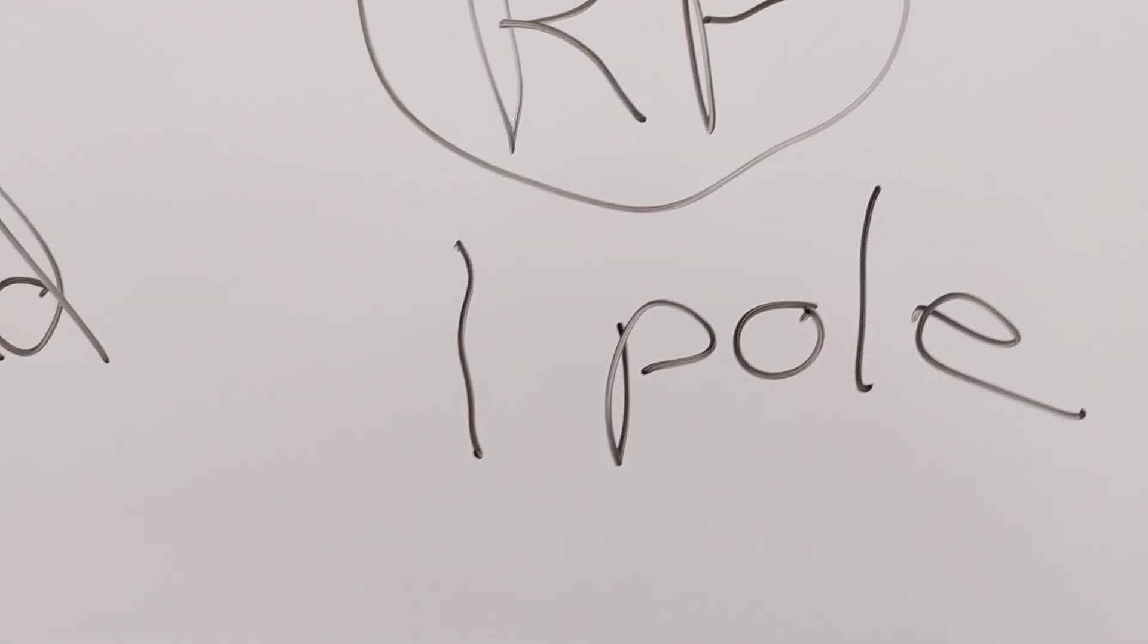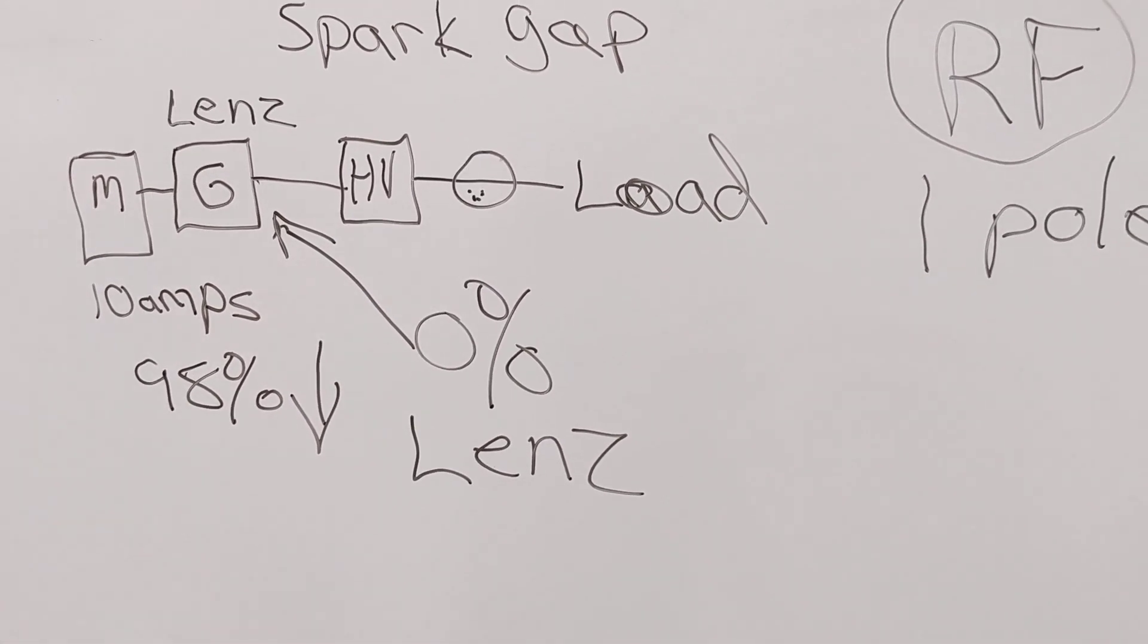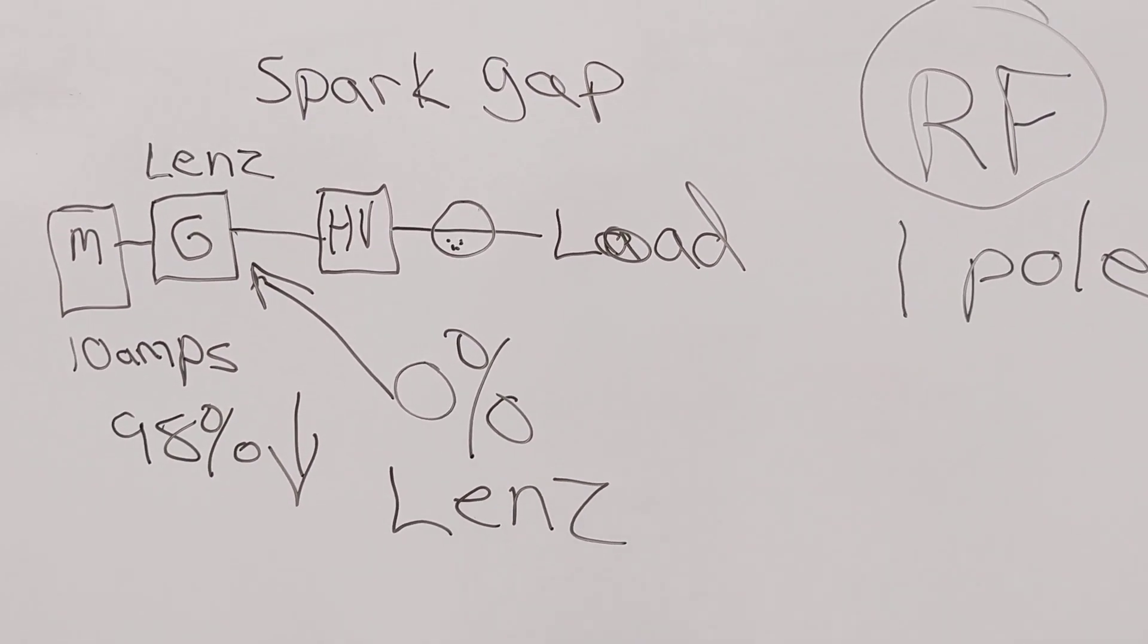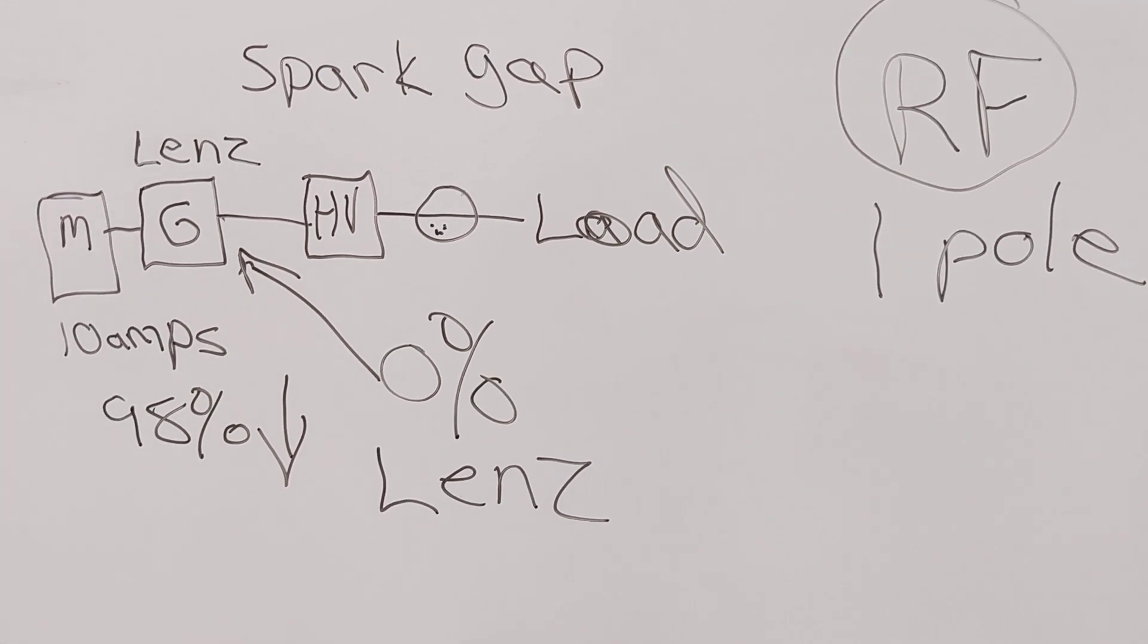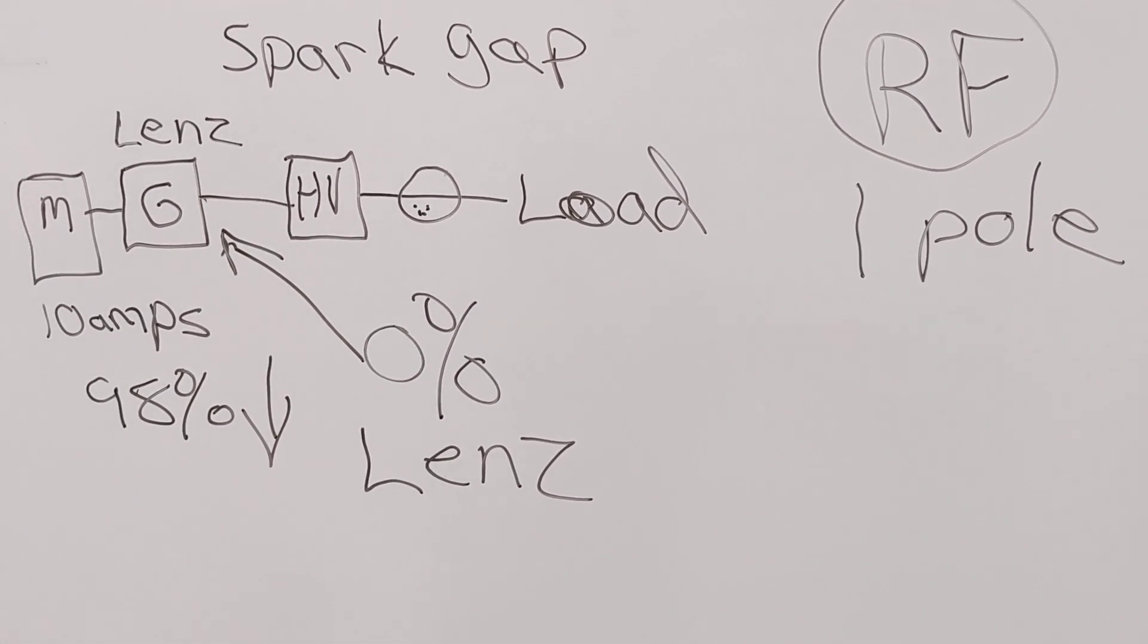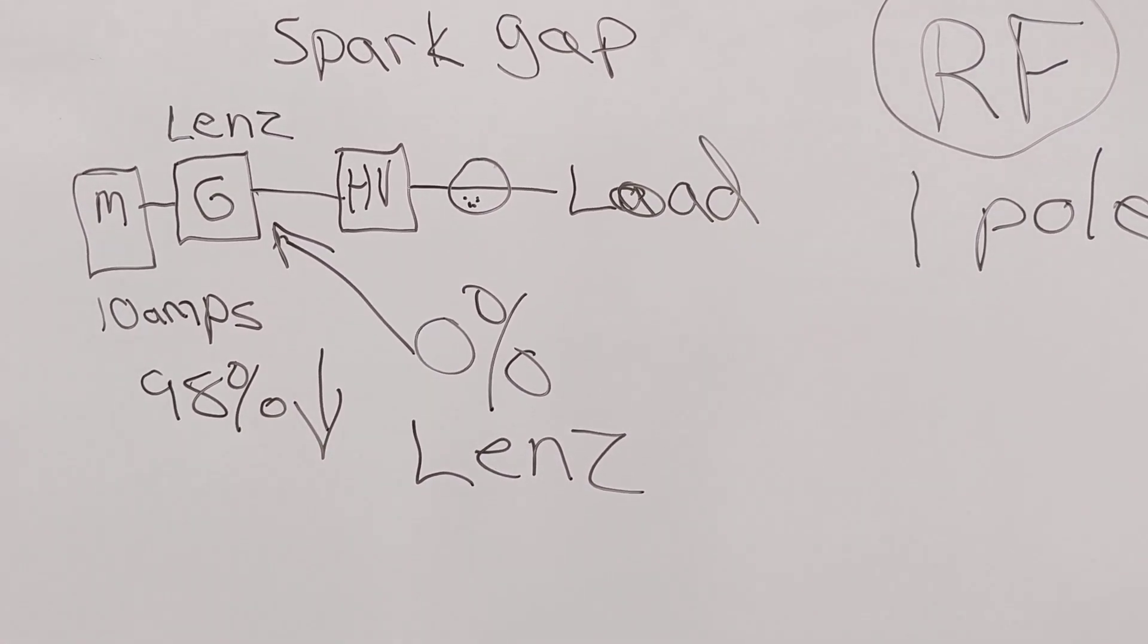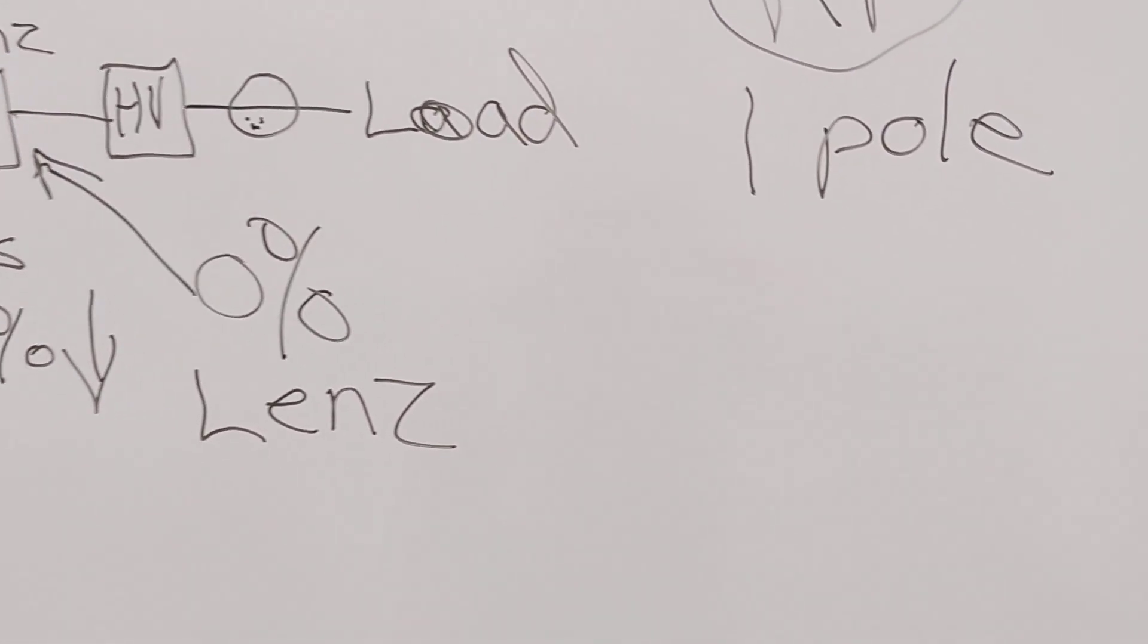If you get a Tesla coil, you can actually transmit sound on a Tesla coil. You can buy them everywhere. You can get them on AliExpress. You can buy them on Amazon. It's a Tesla coil basically with a radio sound module in it. And you can basically broadcast sound over a Tesla coil because it's not using regular voltage. It's using RF.